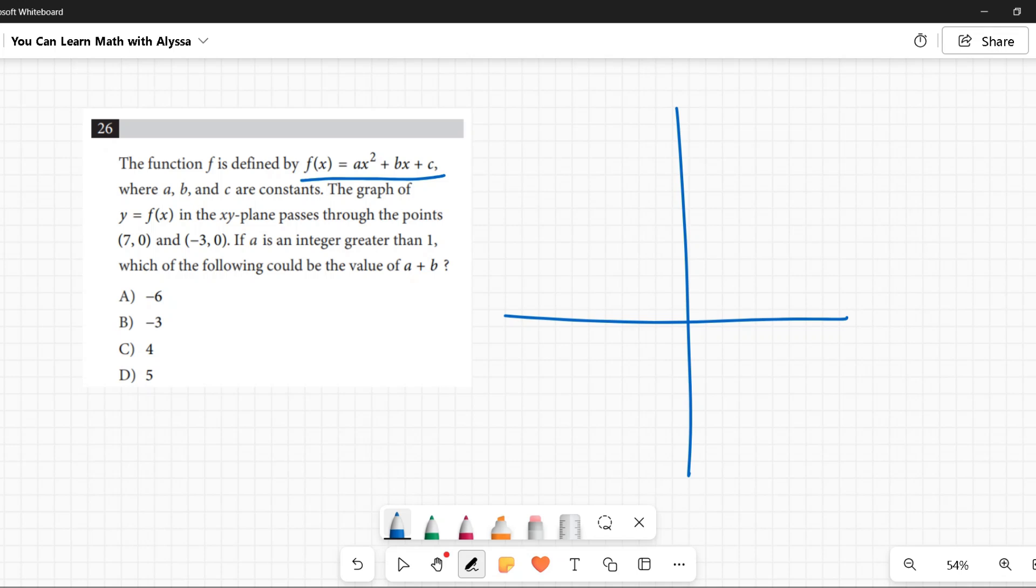We're told that the graph of this function passes through the points (7,0) and (-3,0), and I am not drawing this to scale. I'm just doing this to kind of give me an idea of what's going on. I'm not going to take the time during the SAT to make a scale drawing.